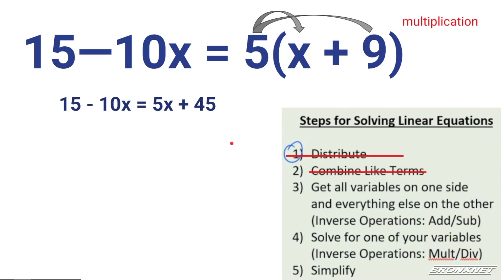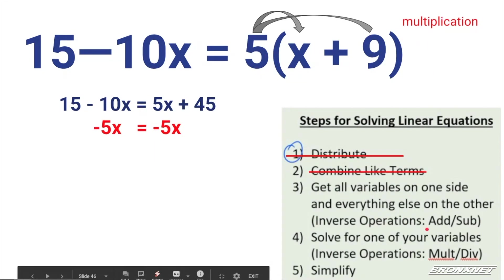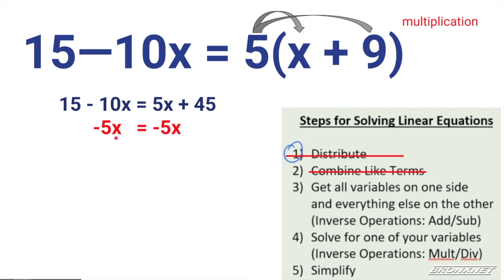So we'll move to step three. What we need to do at this point is get all variables to one side and everything else to the other. We do that using inverse operations — opposite operations — first starting with addition and subtraction. I am going to move the variables to the left, so if I do something to one side, I have to do it to the other.